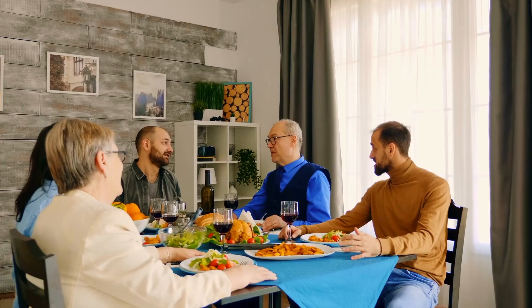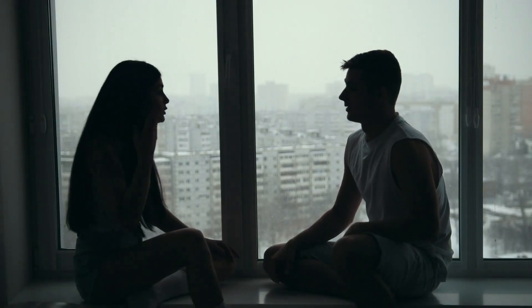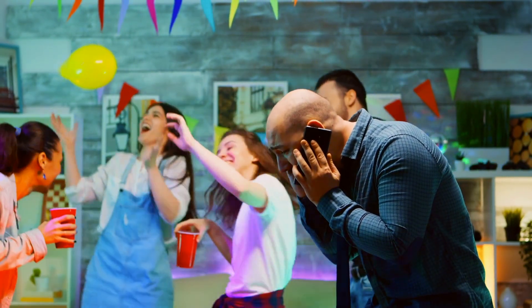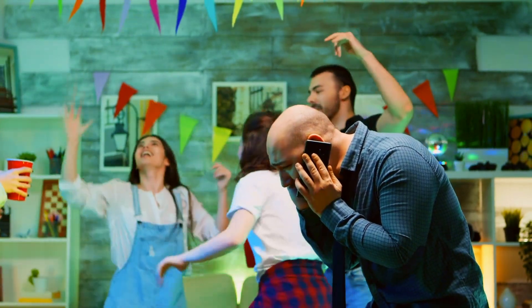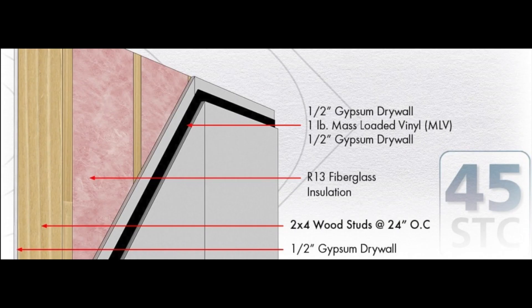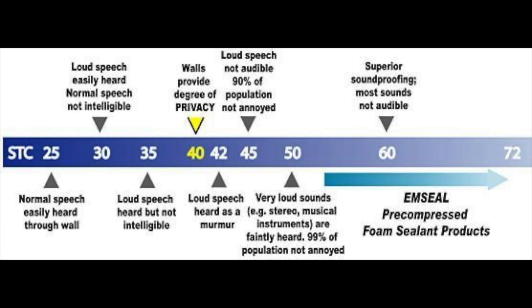Let's break it down in terms of what a typical family would hear through a wall at different STC ratings. An STC rating of 25 means average speech is completely understood. At 30, loud talking can be heard and understood. At 35, loud talking can be heard but not understood. At 40, loud talking is faintly heard but not understood. At 45, loud talking is barely heard only if a person is listening for it. At 50, only the loudest sounds are faintly heard, and at 60 plus, the majority of sounds will not be audible at all.